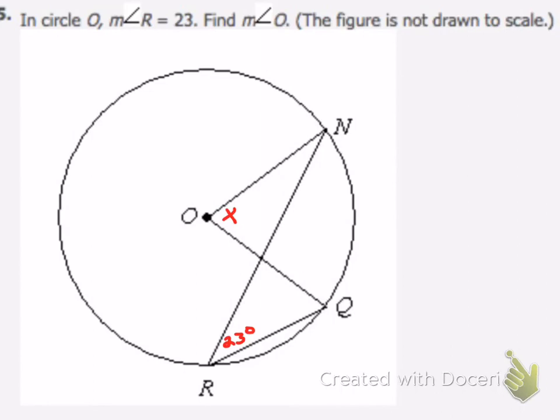is an inscribed angle, and the measure of an inscribed angle is equal to half of the measure of the intersected arc. Okay, angle R is 23 degrees, so what that tells us here is that this arc, arc NQ,